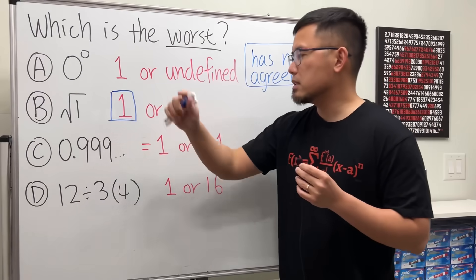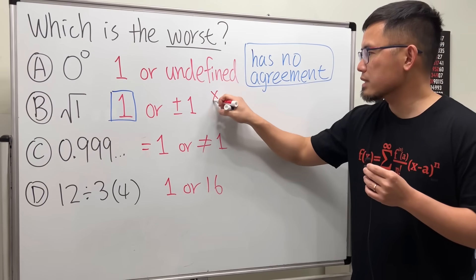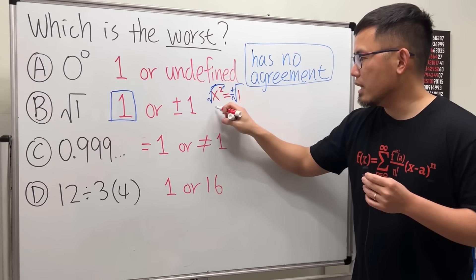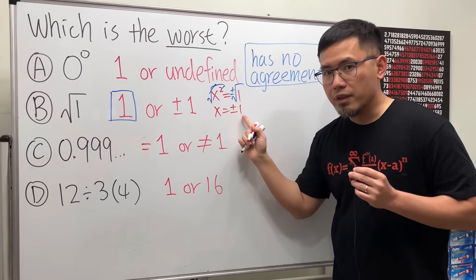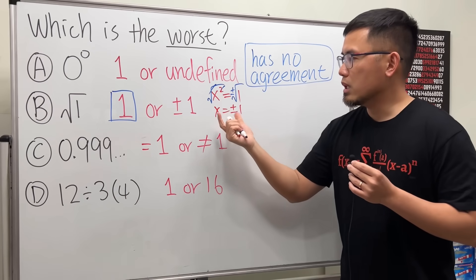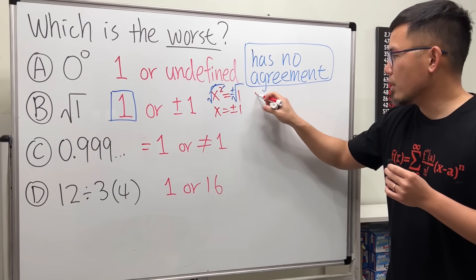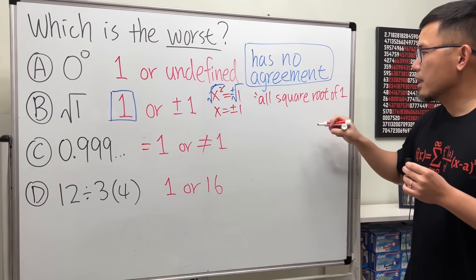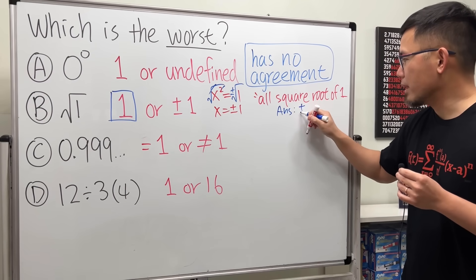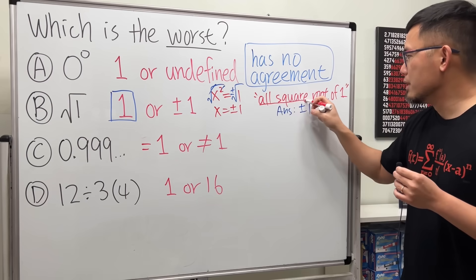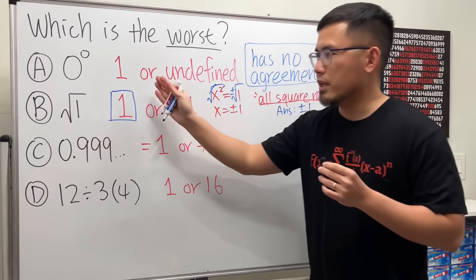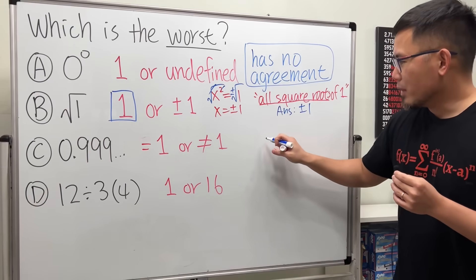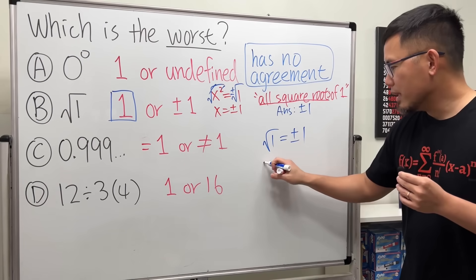You get plus or minus one if you're solving an equation. Say x squared equals one — you take the square root of both sides, attach a plus or minus, and get x equals plus or minus one, because both values square to one. If you want to find all square roots of one, then the answer is plus or minus one. But if it's just the square root symbol alone, answer it as one. If you don't like that, consider: how would you answer the cube root of eight?